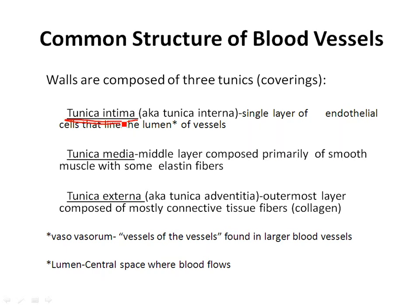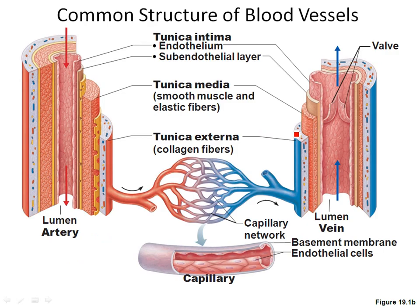You start with the tunica intima — think 'intimate,' the innermost layer. With the tunica intima, you have a single layer of flattened endothelial cells, designed so that you can have exchange of things across these flat cells. On a larger vessel greater than one millimeter, you would also have a subendothelial layer. You can see the endothelial layer of the tunica intima on both the artery and the vein in the diagram, and on larger vessels the subendothelial layer is also part of the tunica intima.